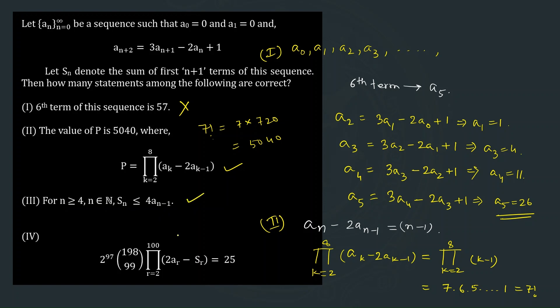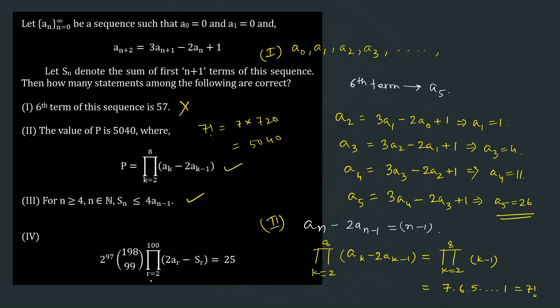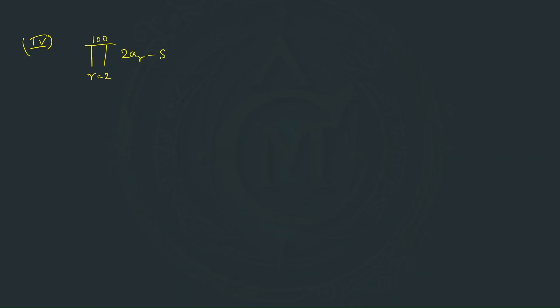Now let us check Statement 4, which says a certain expression involving a binomial coefficient ₁₉₈C₉₉ times a continued product equals 25. We need to verify this. Let us first evaluate the continued product part, which runs from r = 2 to 100 of (2aᵣ − Sᵣ).